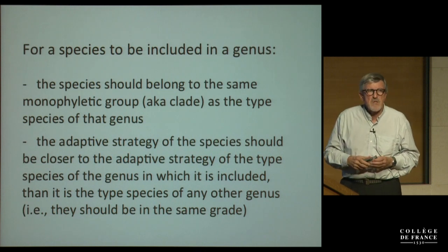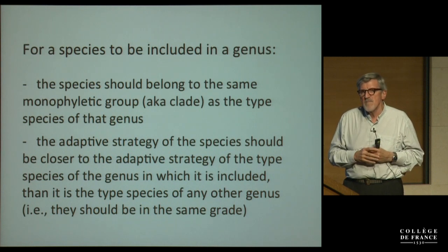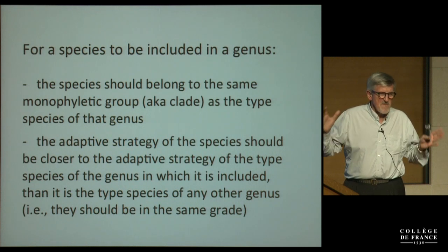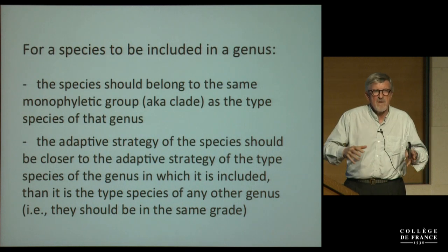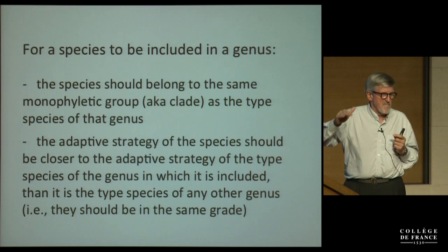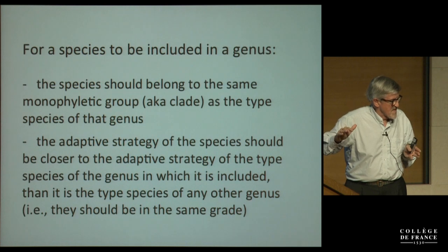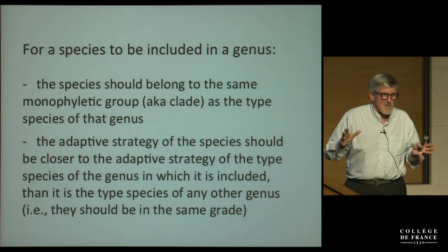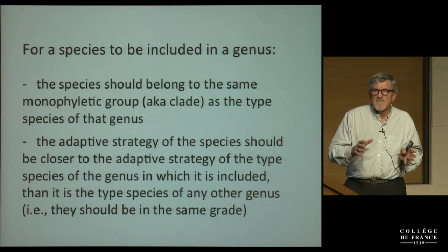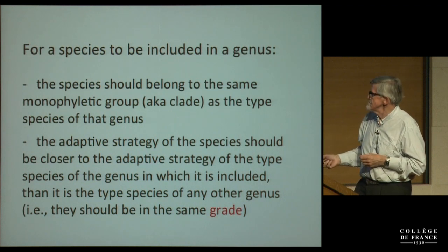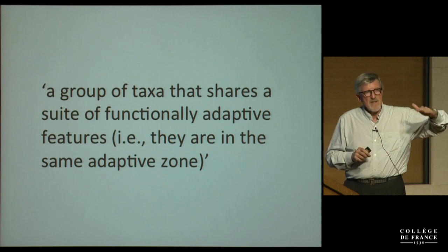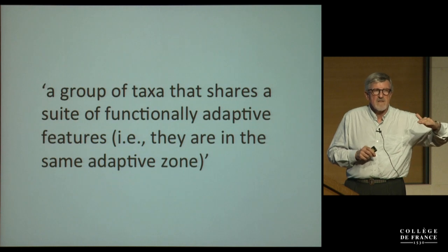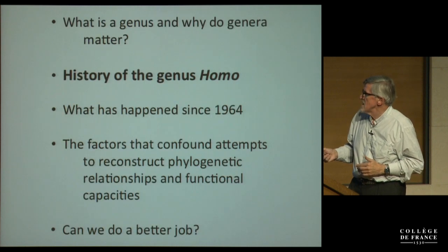The second part of the definition is to do with adaptive strategy. To go back to my motor car metaphors, a grade would be like sport utility vehicles — no matter which company makes them, they all have large wheels, four-wheel drive, and they're high off the ground, and are normally driven in the middle of Paris by people who don't need them. Sports cars would be another example of a grade; minibuses would be another. So it's a group of taxa that shares a suite of functionally adaptive features. That's what we're looking for.